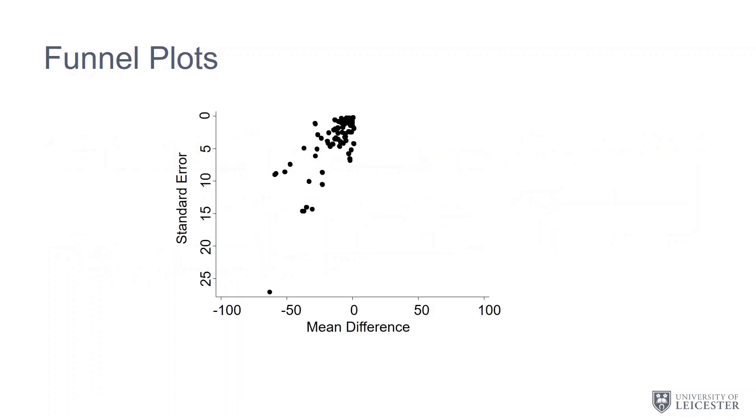To create a funnel plot, we start by plotting a scatter plot of our outcome, which in this case is mean difference as we're looking on a continuous scale, versus standard error. By convention we use a reverse scale for standard error, so we have zero at the top and standard errors get larger as you go down the plot.